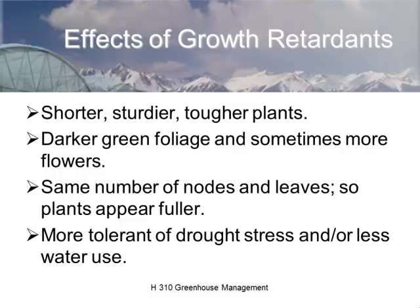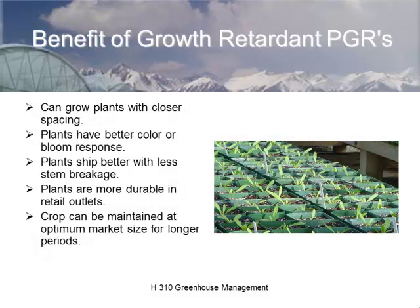Plants treated with anti-gibberellins will be more tolerant of drought stress, allowing closer spacing — more plants per unit area, more dollars per square foot. They'll have better color and bloom response, and since they're stronger and shorter, they won't fall apart in the truck and will last longer in the retail environment. We're also maintaining the plant at optimum market size for longer, because if it's not the market size your vendor requested, you won't be able to sell it.